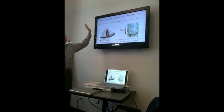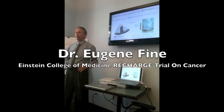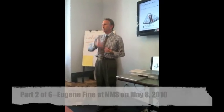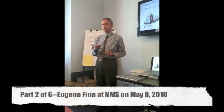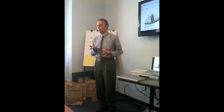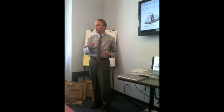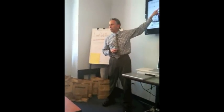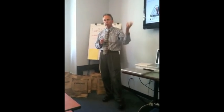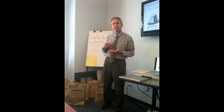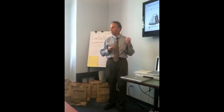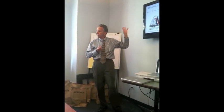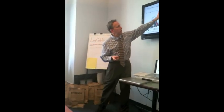HIF-1-alpha — hypoxia inducible factor — increases when you're hypoxic. Ordinarily you have a glycolytic pathway which is anaerobic; you don't need oxygen for that at all. When you go into the Krebs cycle you need oxygen. What does HIF-1-alpha do? It increases glycolytic enzymes so the cells that are now far and distant from the blood vessel have an alternative mechanism — they can start utilizing glycolysis more selectively and not depend so much on aerobic metabolism.